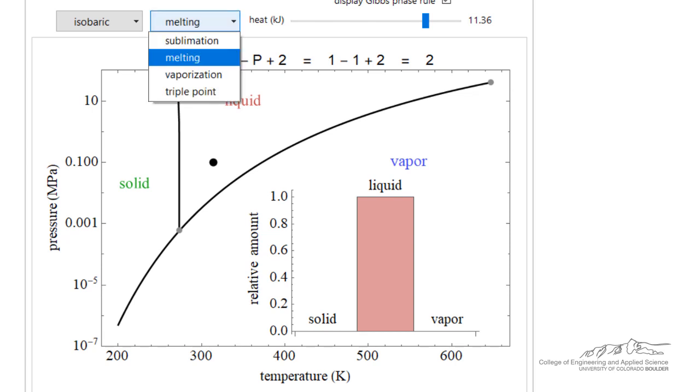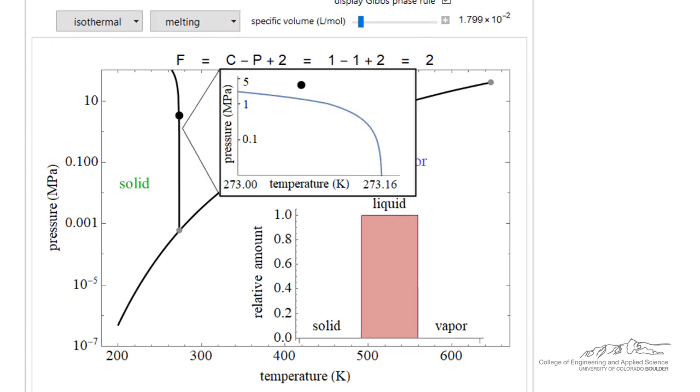We'll pick one more example. And let's look at isothermal melting, because now on the diagram, you notice we have an insert. This line is so steep, it has the negative slope, but it's so steep that we need the insert to show the behavior.